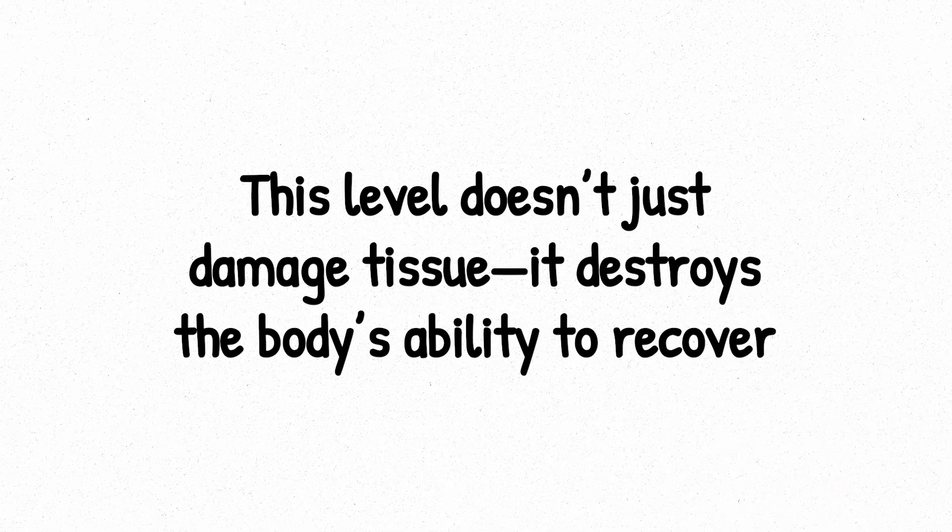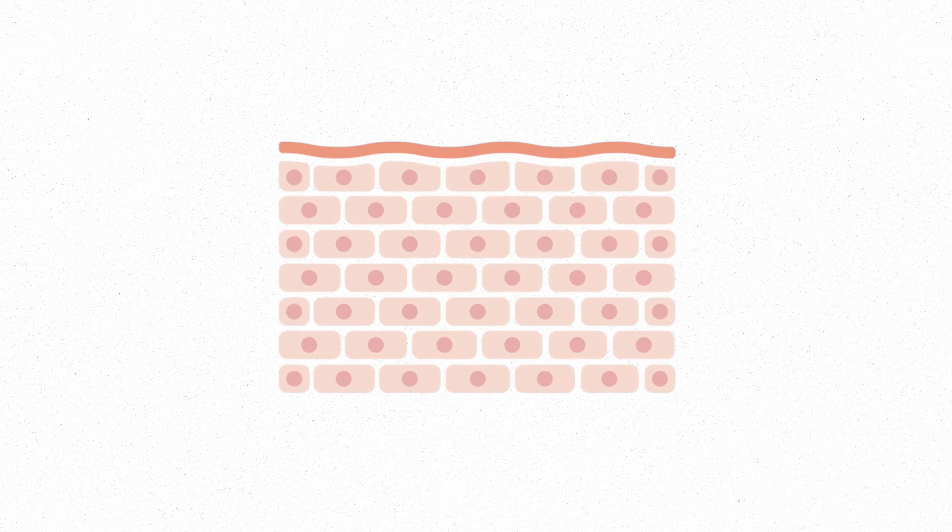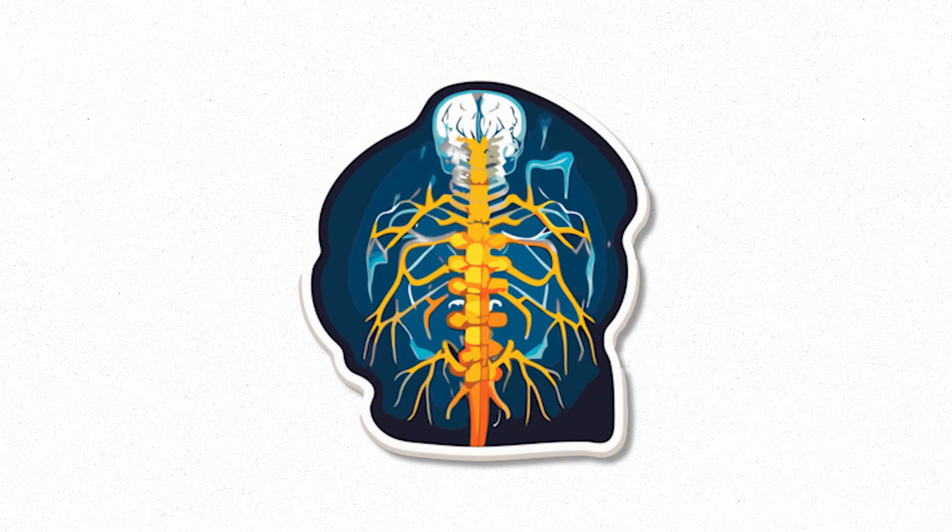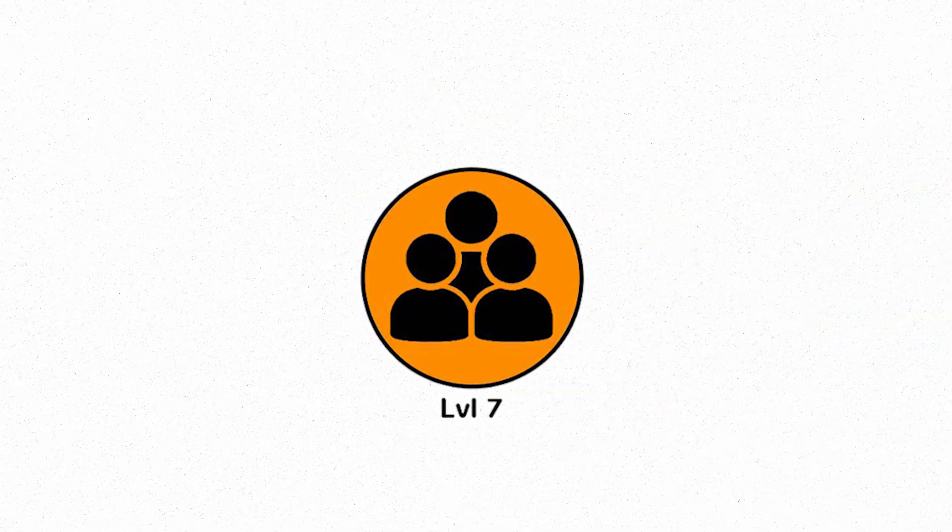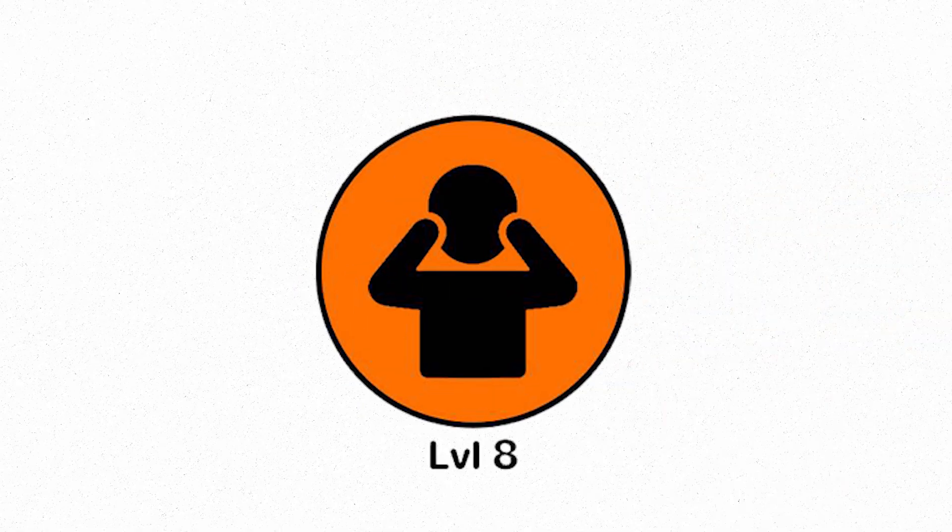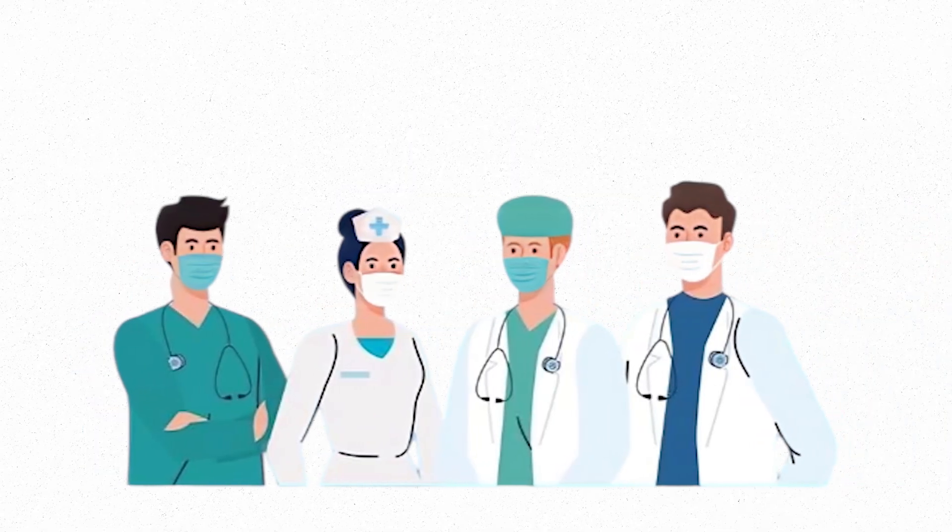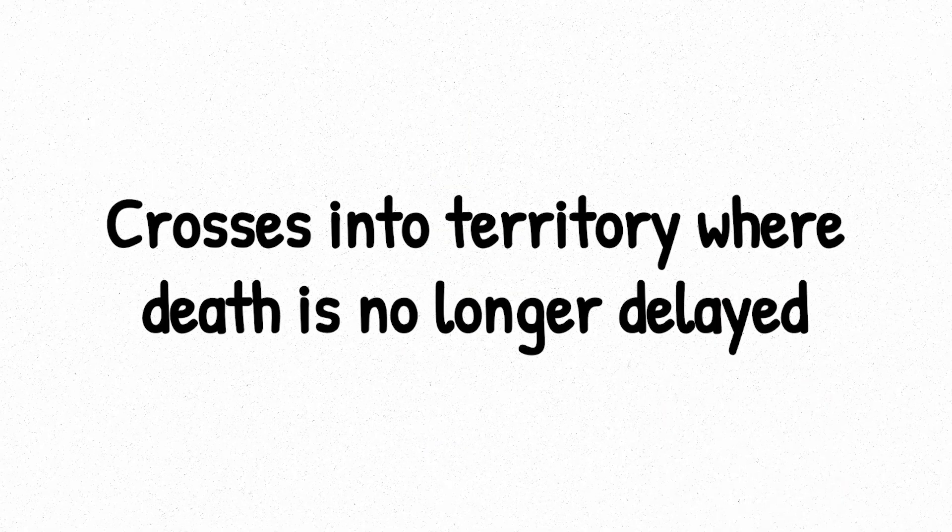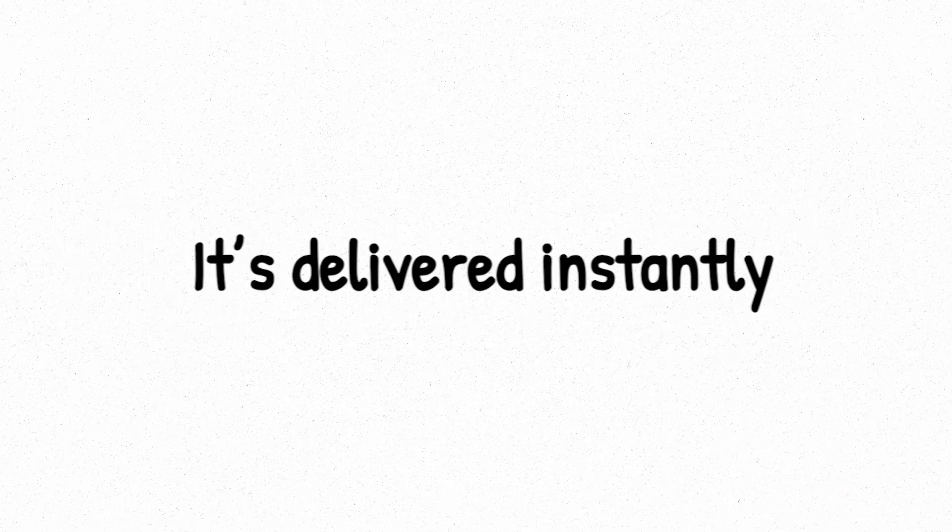This level doesn't just damage tissue, it destroys the body's ability to recover. Even skin cells stop regenerating. Internal bleeding becomes unstoppable, and the central nervous system begins to degrade. Level seven was a race against time. But level eight? There is no race, only fallout. Even the best doctors in the world can only slow what's coming. The body simply can't endure this much chaos. And what lies beyond level eight? Crosses into territory where death is no longer delayed. It's delivered instantly.